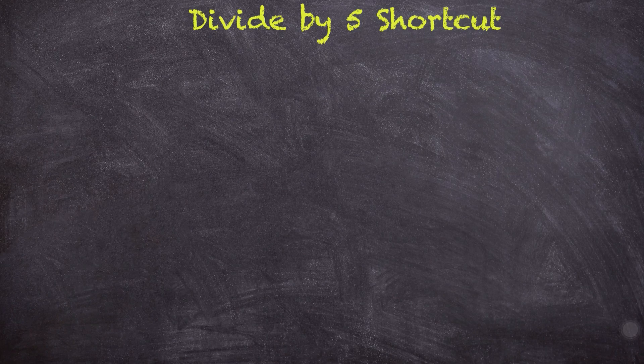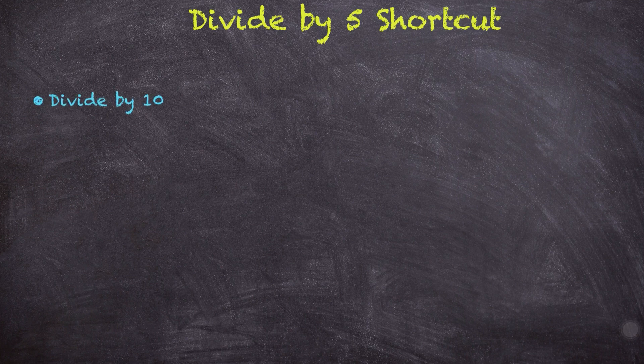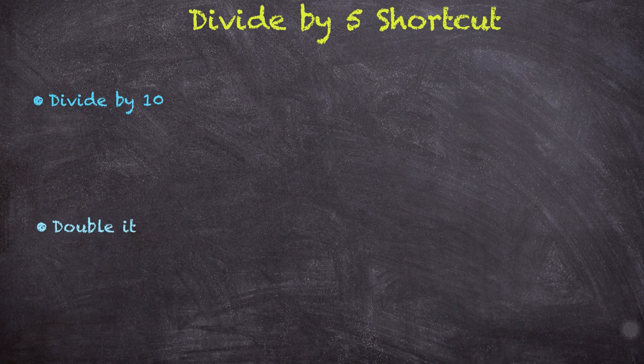Now we're going to divide by five in two simple steps. Step one is that we'll divide the number by 10 first, and step two is that then we will double it. So let's do a couple of examples.